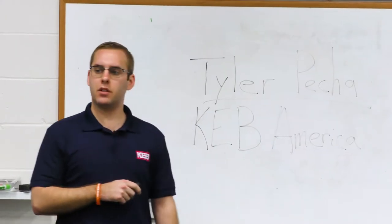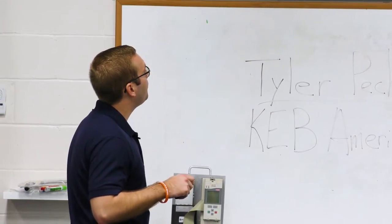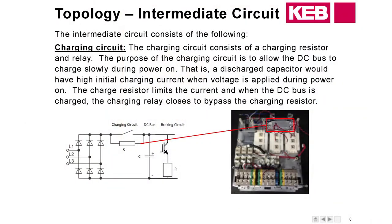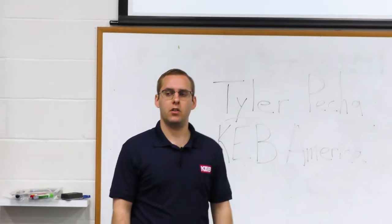Moving on to the intermediate circuit — we're going to have the charging circuit up here in the corner. This is used on initial power up. Due to how a discharged capacitor behaves, if you were to initially power up without this charging circuit there would be a large inrush of current that would actually cause damage to internal components of the drive. To limit that inrush, we run the current through a resistor, and then as soon as the DC bus charges up we bypass that resistor and connect directly to the line.